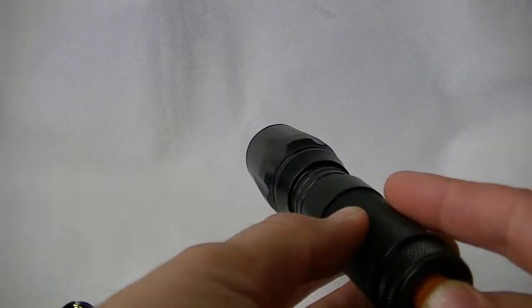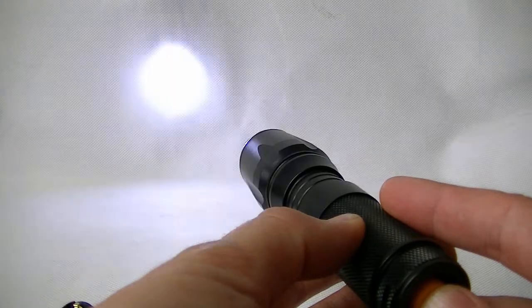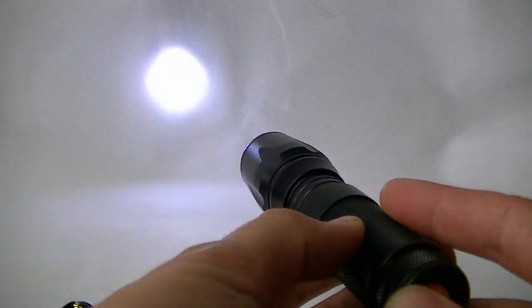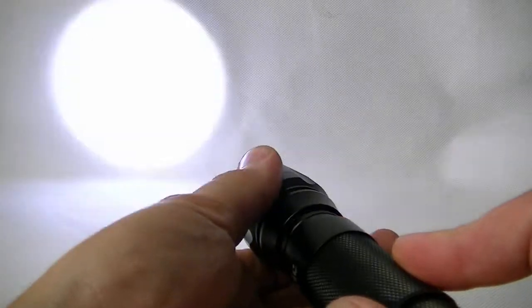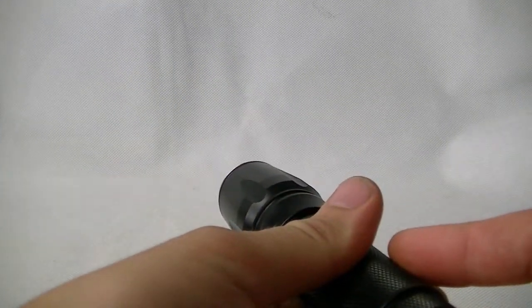To zoom the torch in or zoom it out, all you need to do is move the lens further away from or closer to the LED by moving the lens forwards and backwards, which I'm doing here. What that effectively does is focus the beam from the LED through the lens onto the object you're shining onto.